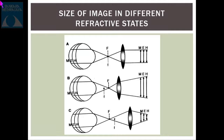So in a myope, if you want to get a whole view of the fundus, you need to move the lens towards you. But if you want to get greater magnification of a smaller view of the fundus, you need to move the lens towards the patient. The reverse applies for a hypermetrope — if you move the lens towards the patient, the field of view will decrease but the magnification will increase, and vice versa.